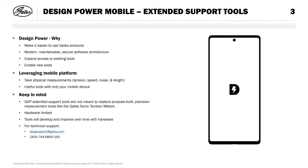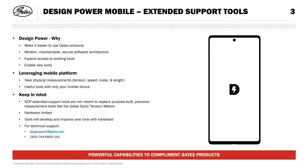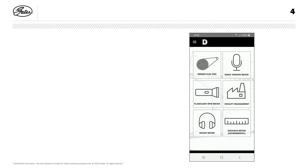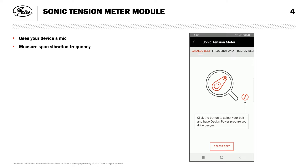These extended support tools provide powerful capabilities to complement Gates products. Let's go through each one of our extended support tool modules and how to use them. Up first, the sonic tension meter. This module uses your device's built-in microphone to measure the frequency at which your belt span vibrates.